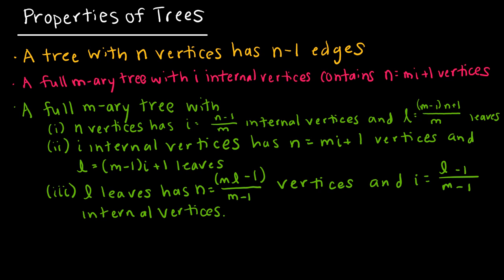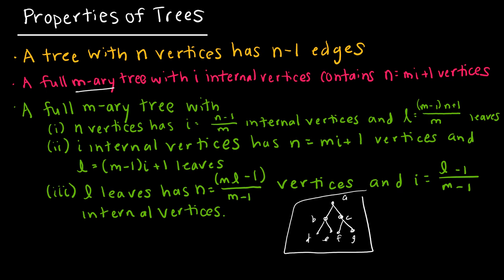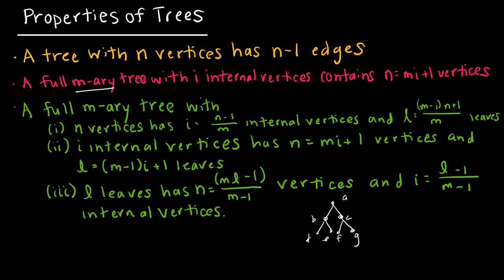Now I want to explain what a full M-ary tree is. We already talked about an M-ary tree — for instance, a binary tree allows at most two children per internal vertex. A full binary tree means each internal vertex has exactly two children, not at most two. This example shows a full binary tree, and if I added another row, each of those vertices would also have exactly two children.